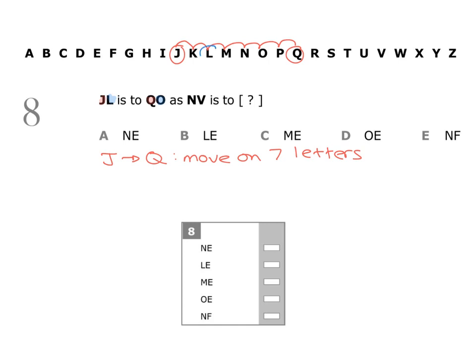Now looking at the letter N, to work out the first missing letter we need to move on seven letters from N. N is here. If we move on seven letters—one, two, three, four, five, six, seven—that brings us to the letter U. But looking at the answer choices, we don't have the letter U in any of them, so that makes me think this is going to be about the position of letters in the alphabet.